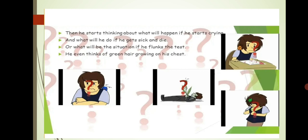Then he starts thinking, what will happen if he starts crying? And what will he do if he gets sick and dies? Or what will be the situation if he flunks the test? He even thinks of green hair growing on his chest. You can see in this picture the child is getting green hair on the chest, the child is flunking in the test, the child is sick and dying. And what if the child starts crying when he doesn't want anybody to see him crying? So these are the worries of a small child of your age.